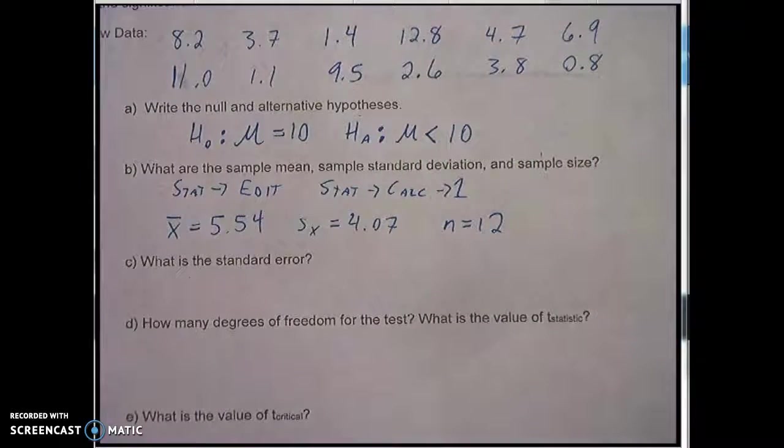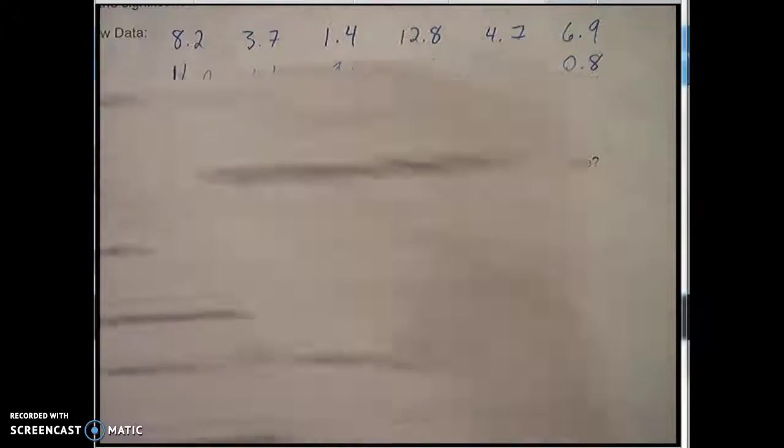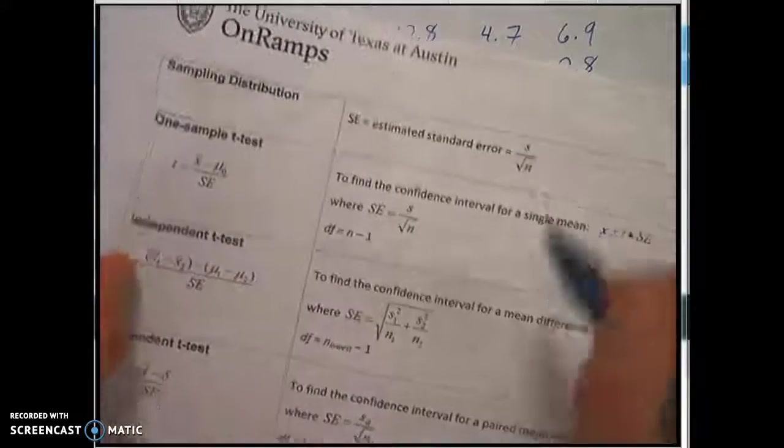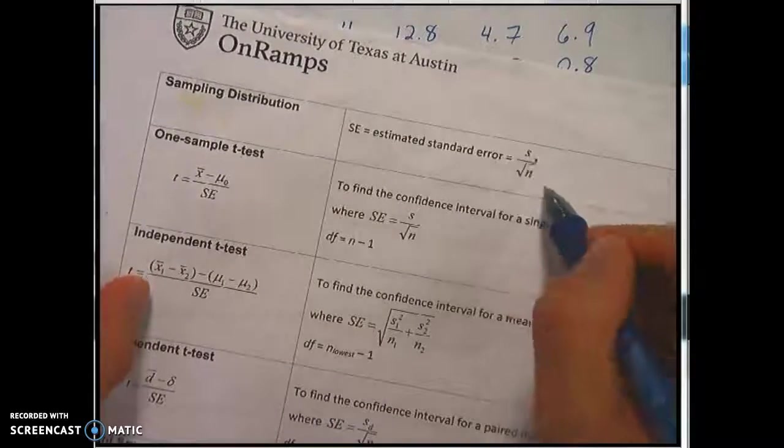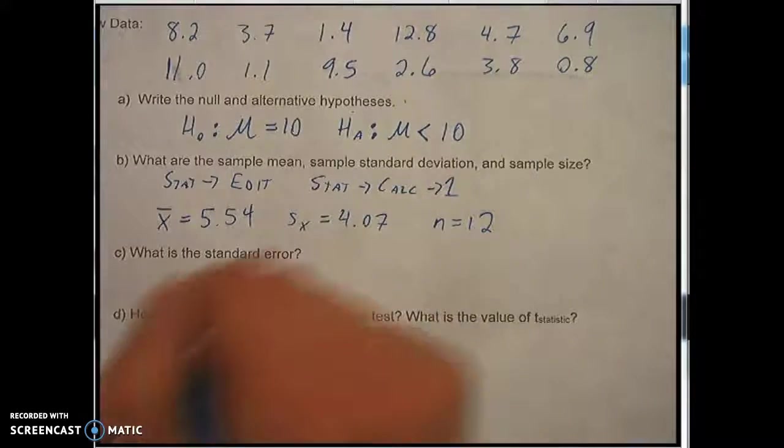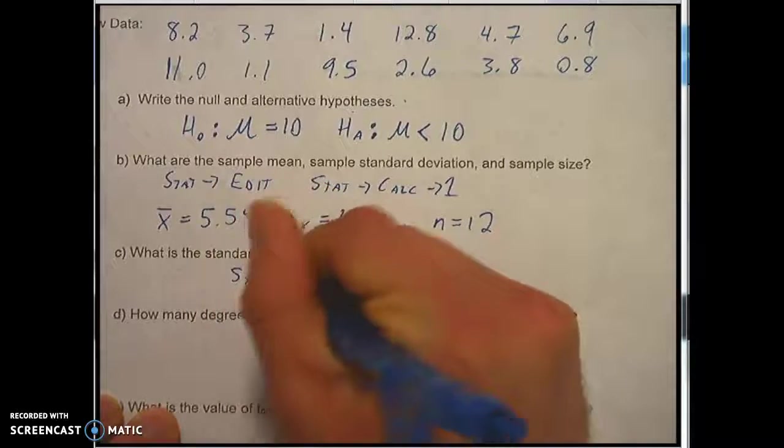Next thing we're supposed to do is find the standard error and the standard error from your formula chart is the sample standard deviation divided by the square root of n.